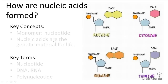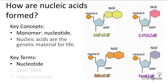Nucleic acids are polymers made from nucleotides. They're incredibly important because they make up the genetic information in all living things. There is deoxyribonucleic acid, the familiar DNA, and ribonucleic acid, which is RNA.